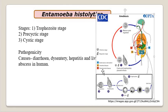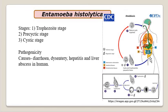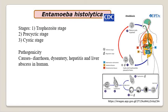In the feces of an infected person, all four stages may be observed: trophozoite, mononucleated cyst, binucleated, and quadrinucleated cyst. Entamoeba histolytica causes diarrhea, dysentery, hepatitis, and even liver abscess if the cyst migrates to the liver. The person also becomes excessively anemic due to blood loss from rupture of intestinal walls.